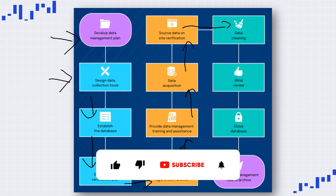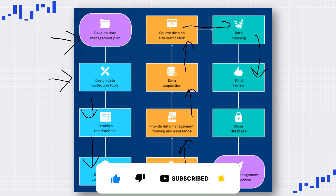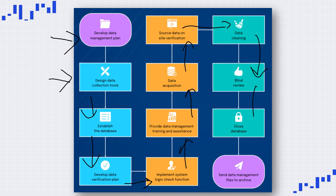When you perform central monitoring, you can also fire data queries. That particular step is called data cleaning — you clean the errors found in the data. Then there is a blinded review of the collected data. Finally, if all the data is correct, we move on to database closing, where there is no further editing of the data. The data is finalized and sent to CDM servers where it is archived, and later used for statistical analysis and regulatory submissions.